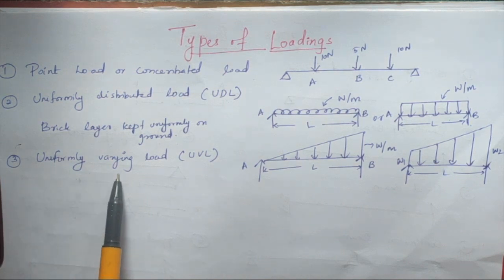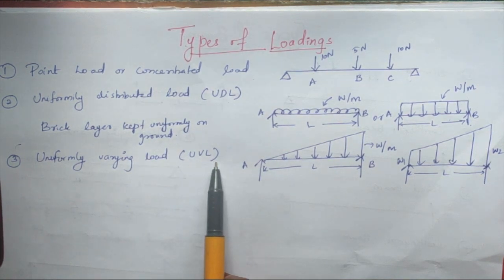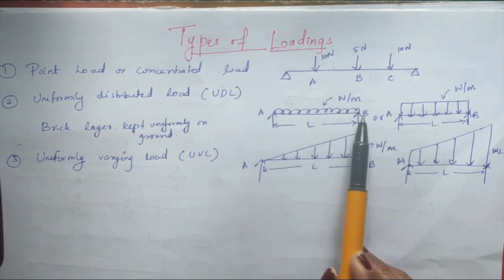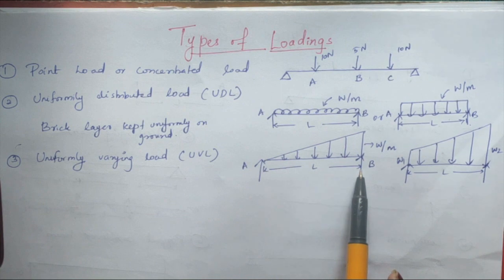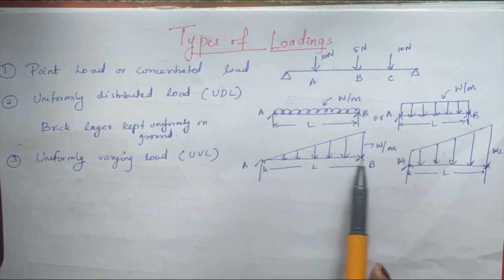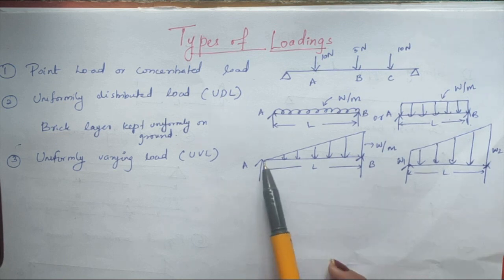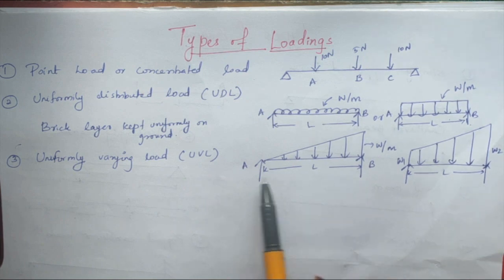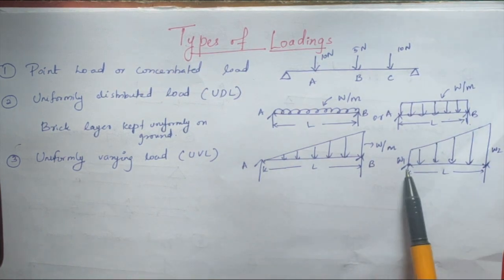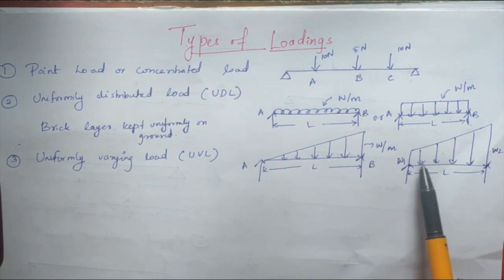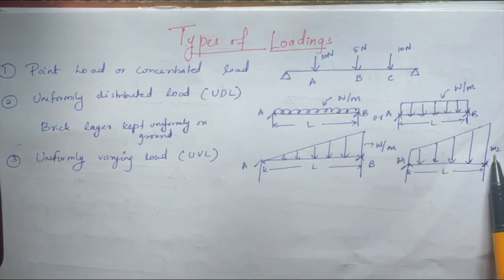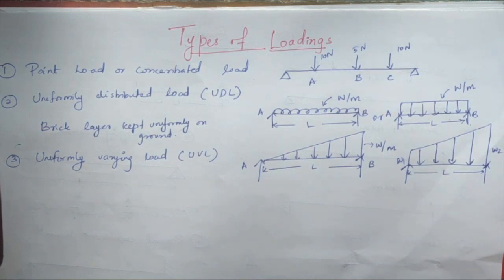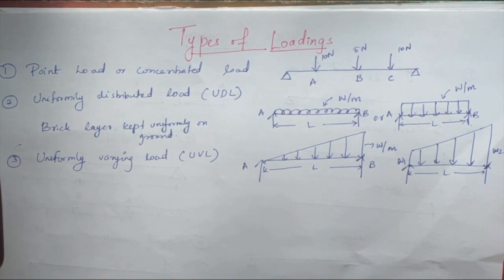The third type of load is uniformly varying load, or UVL. Unlike UDL, it does not have the same value at every point — the value varies throughout the length. For example, at point A it is 0 and at point B it has a value W per meter, increasing along the length. A trapezoidal load is also a UVL, where the value changes from W1 to W2 over a length.